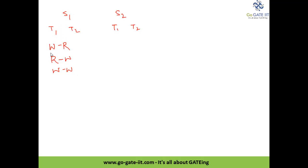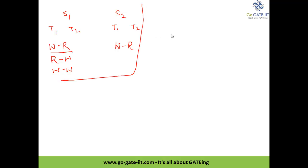For example, in S1 we have only a write-read conflicting operation for T1 and T2. So in S2 also there should exist conflicting operations in the same write-read manner. Then only these two schedules are said to be conflict equivalent. Let's consider one example: S1 has T1 and T2 with R of A, W of A, W of A, R of B, W of B.